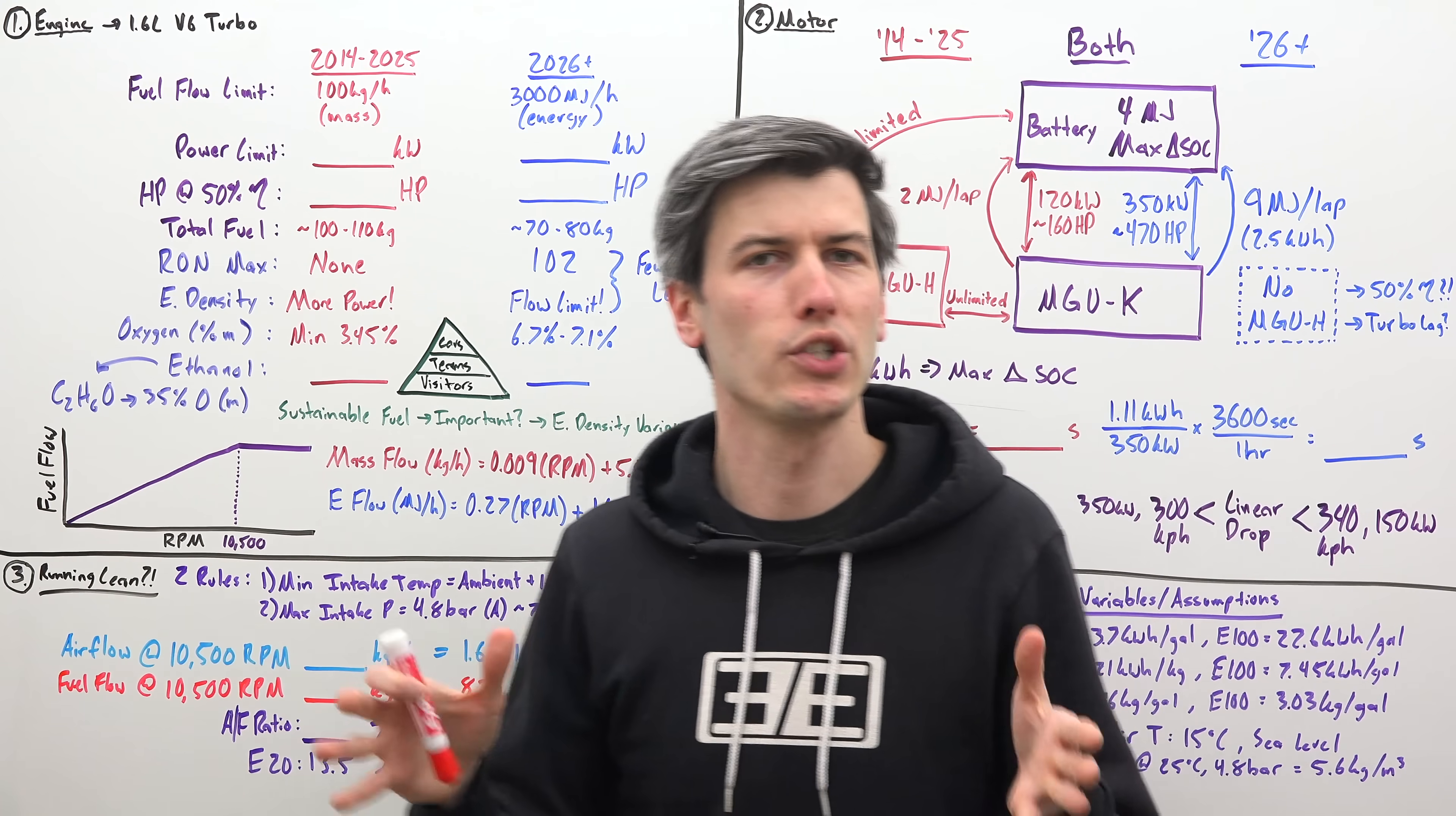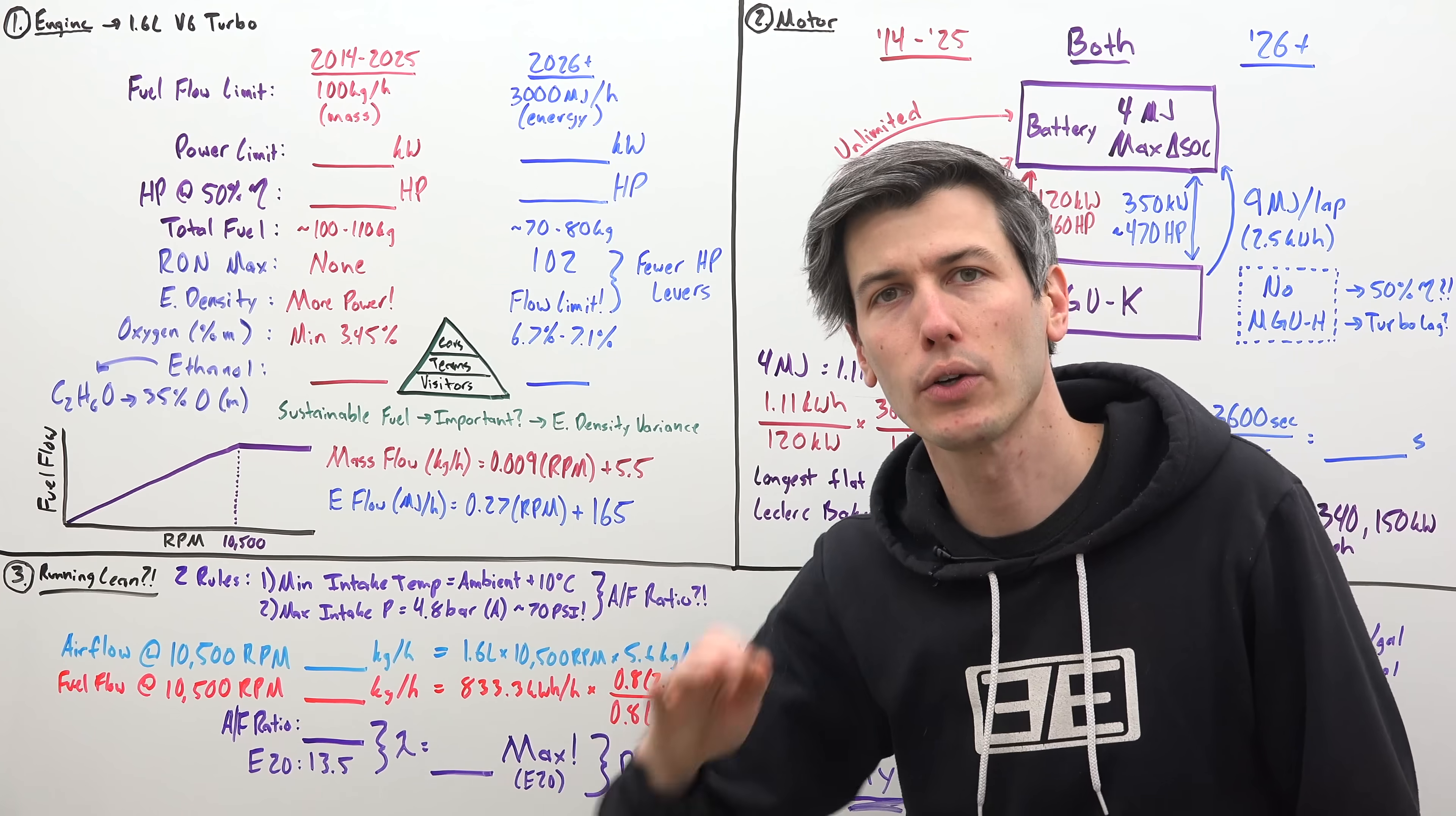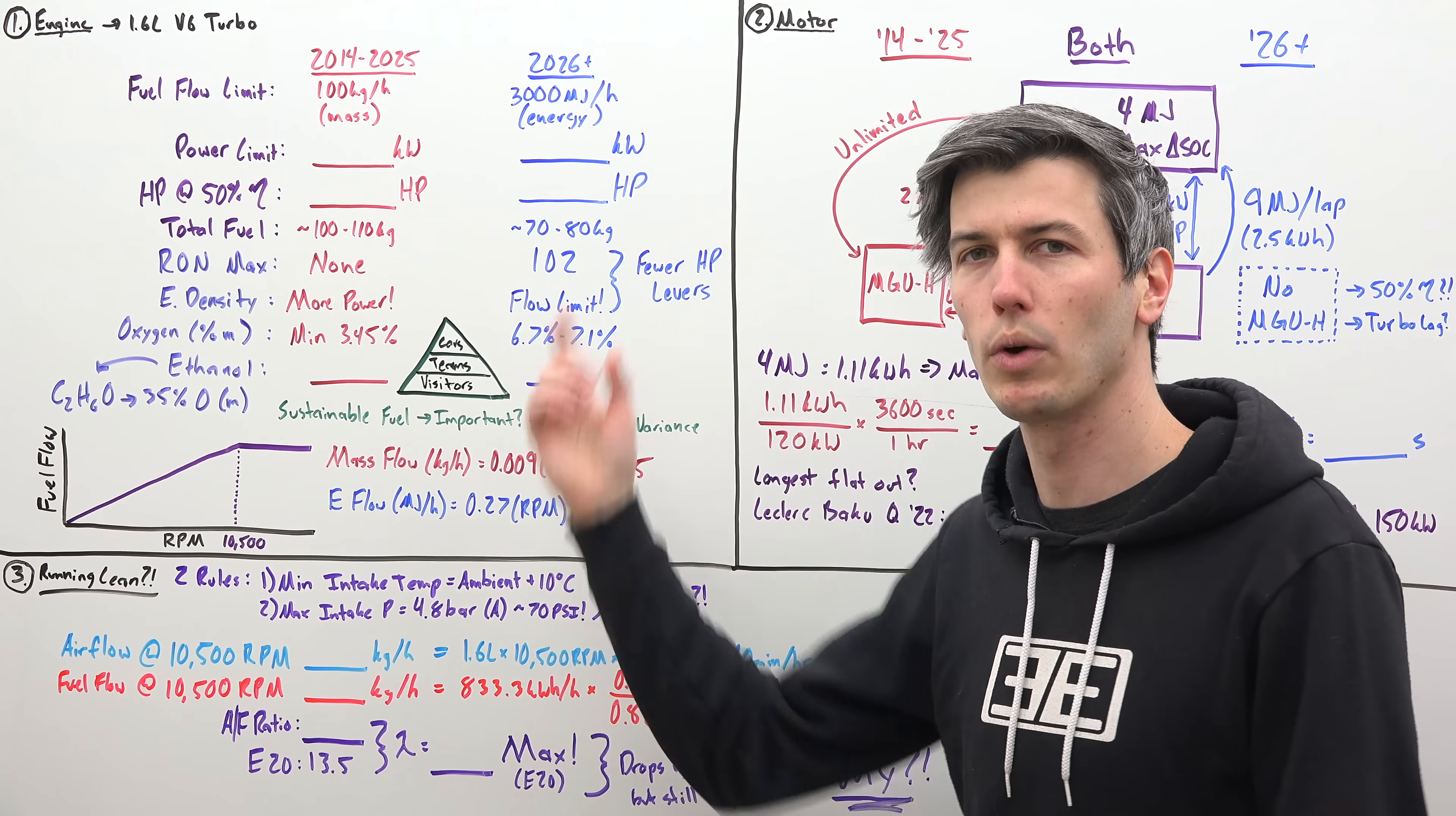So the really big change coming to the engines is how the fuel flow is going to be limited. It's going to go from a mass flow limit to an energy flow limit. So currently the engines are limited to a fuel flow rate of 100 kilograms per hour. That's going to switch in the 26th season to 3,000 megajoules per hour. Now these are difficult numbers to compare. They're different units.